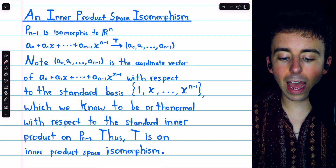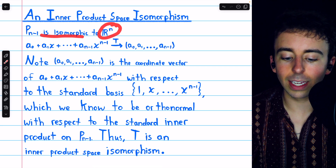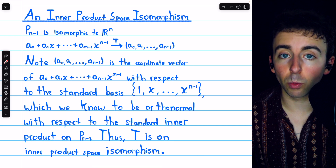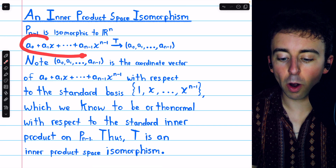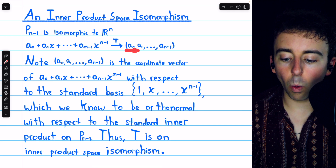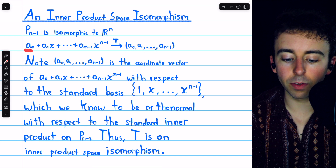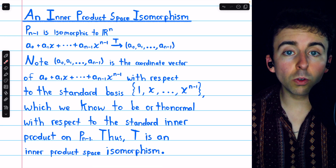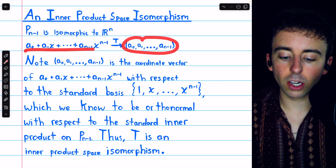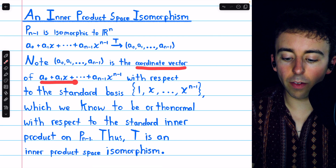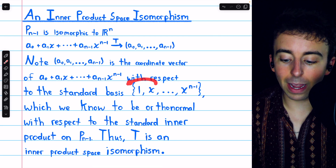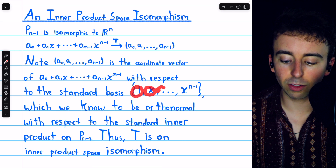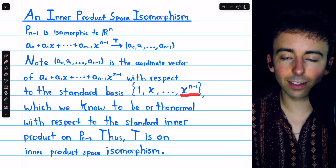The vector space of polynomials up to degree n−1 is isomorphic to Euclidean n-space, and an isomorphism between them is seen here. What it does is it takes an arbitrary polynomial from the space and maps it to the ordered n-tuple consisting of the coefficients of the polynomial: a0, a1, a2, and so on, all the way up through a_{n-1}.